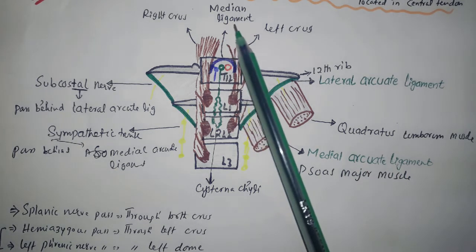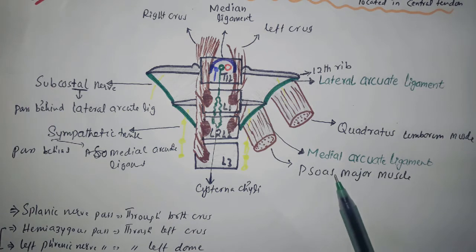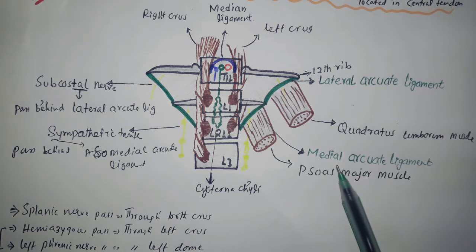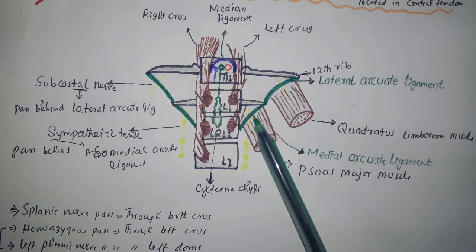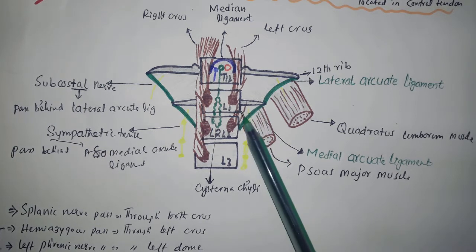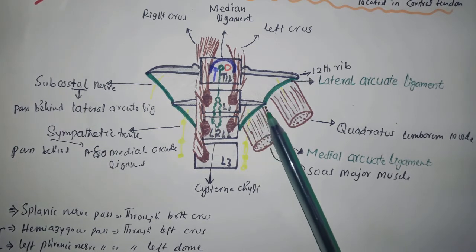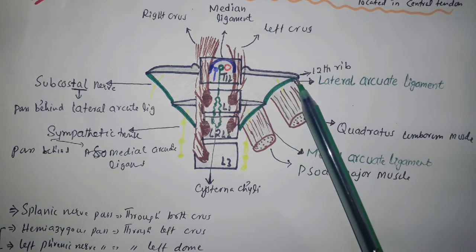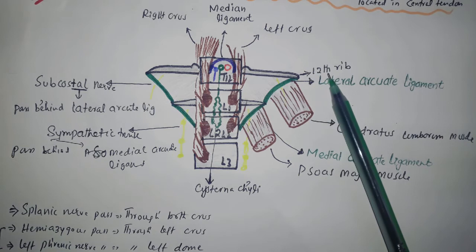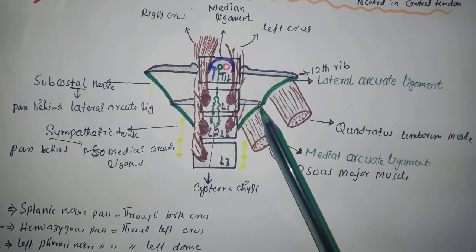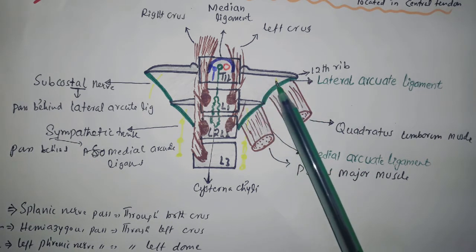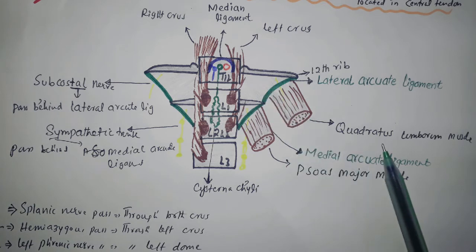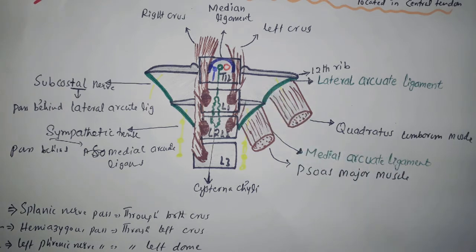The medial arcuate ligament is formed from the fascia of the psoas major muscle, meaning it arches over the psoas major muscle. The lateral arcuate ligament extends from the twelfth thoracic rib to the transverse process of L1 and arches over the quadratus lumborum muscle.